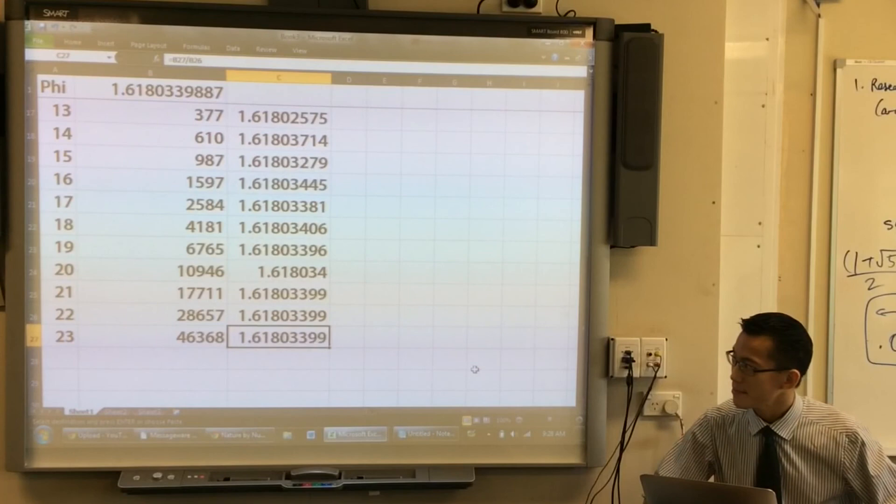Okay, so that's pretty cool, hey? Look at that. The Fibonacci sequence has given us phi just by comparing successive terms. That's pretty amazing, right?